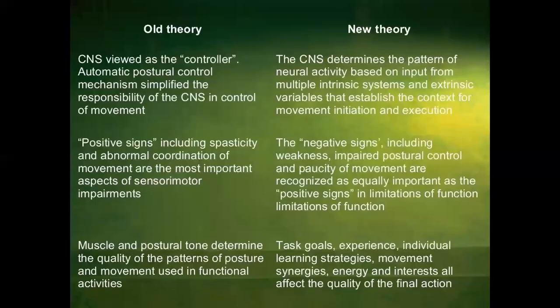The old theory views the CNS as the controller, where automatic postural control mechanisms simplify the responsibility of the CNS in control of movement. The new theory says the CNS determines the pattern of neural activity based on input from multiple intrinsic systems and extrinsic variables that establish the context for movement initiation and execution.